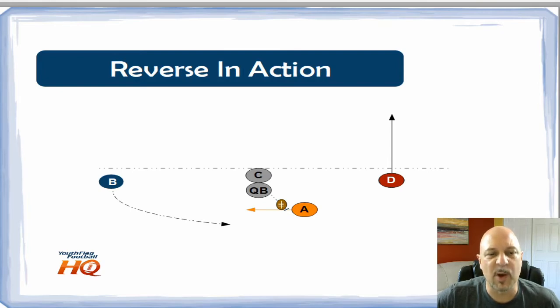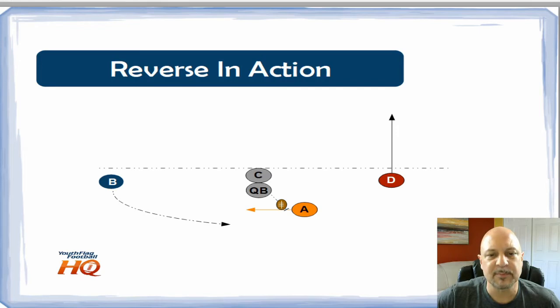At the start of the play, A is going to come across behind the quarterback and take that handoff on the sweep. Meanwhile, B is going to reverse direction and start coming towards A but gaining depth so that player B can go behind player A deeper in the backfield.